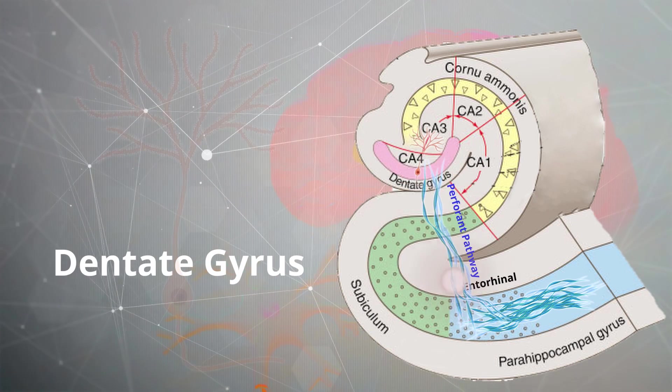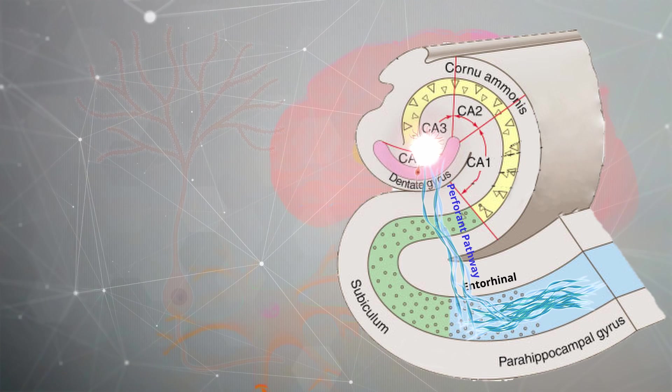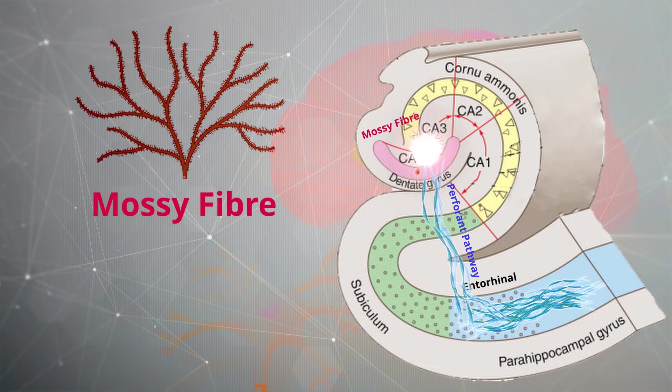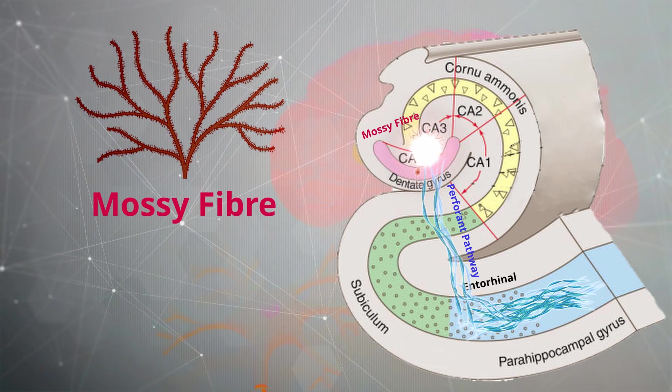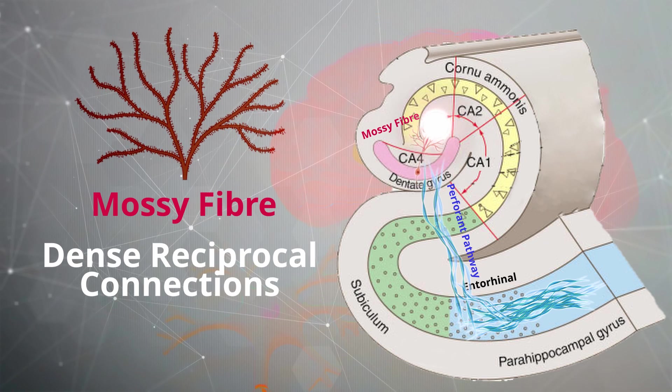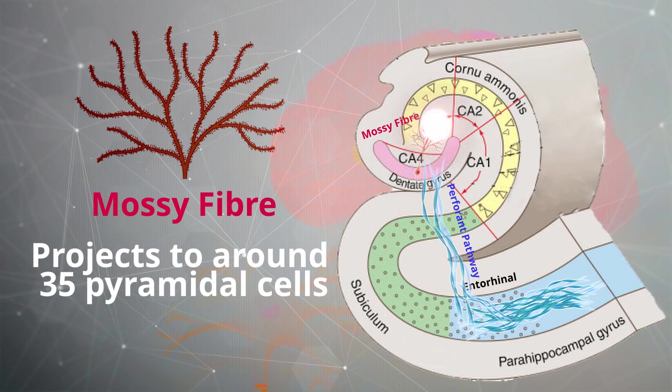From here, the dentate gyrus will transmit its signals to the CA3 pyramidal neurons through the mossy fiber pathway, which is the second pathway of the circuit. These mossy fibers have dense reciprocal connections which are able to generate new patterns of activity, where one single mossy fiber can project to around 35 pyramidal cells within the CA3.